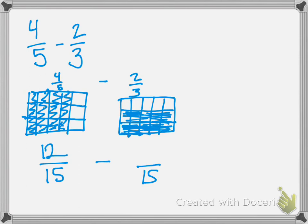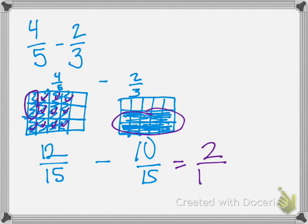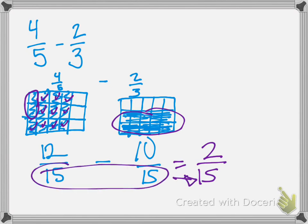And in the second one we colored in 10 sections. Then we come back to the first one and we want to get rid of 10 sections because that's what we're subtracting — 1, 2, 3, 4, 5, 6, 7, 8, 9, 10. We have 2 fifteenths left. And we see our 15 here — 12 minus 10 is 2.